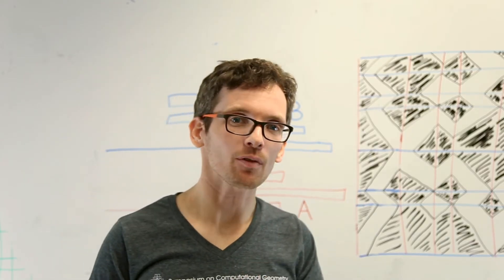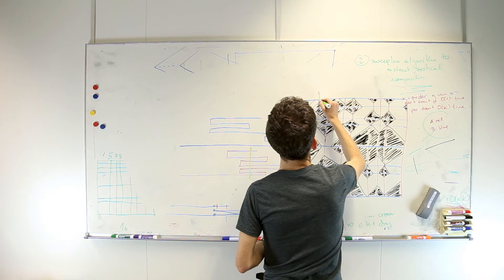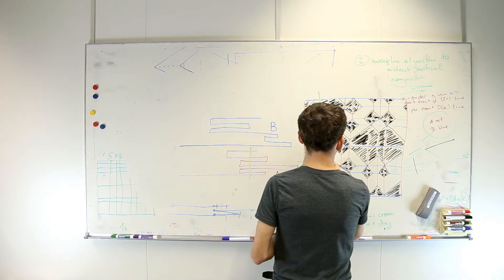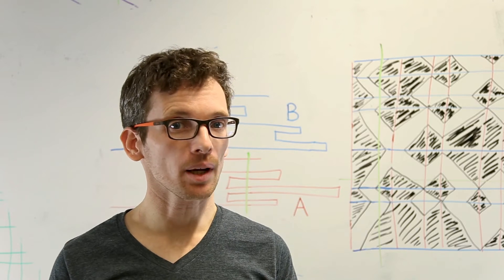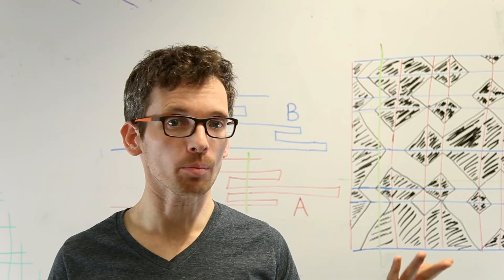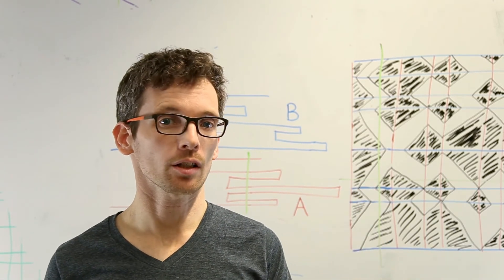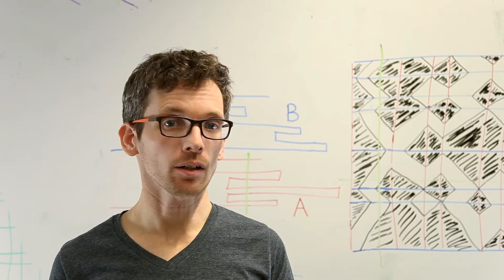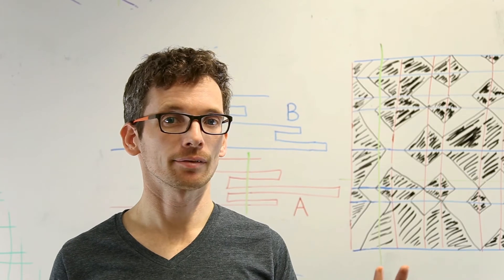For any vertical line, the number of intersections with the boundary of the free space is at most twice the ply of A. The same holds for horizontal lines and the ply of B. In particular, this implies that when both A and B have bounded ply K, computing the Fréchet distance becomes quite trivial. The diagram now only has complexity K times n, so we can construct it explicitly. Yes! And by construct, I mean compute.